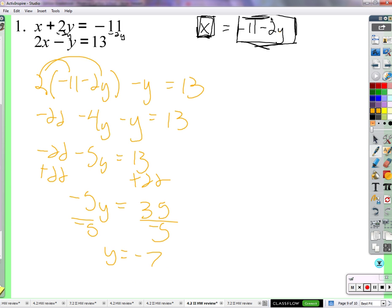Now we know y is negative 7, we'll just come right back to this equation and find x. x equals negative 11 plus 14, so x is 3. The solution is (3, negative 7).